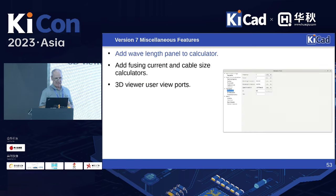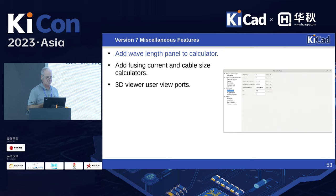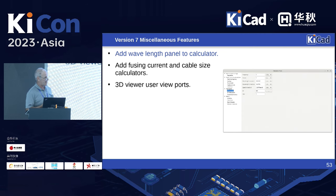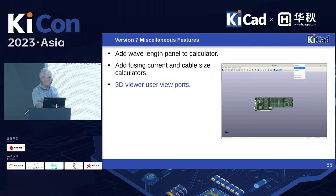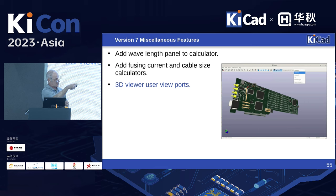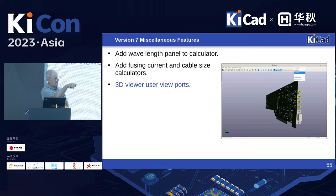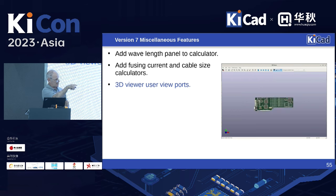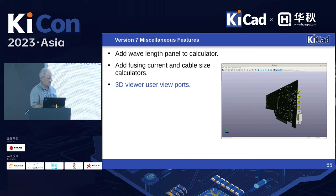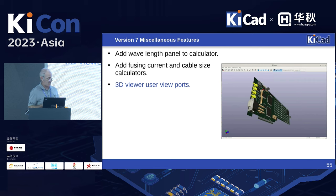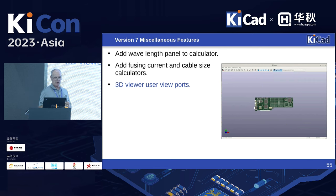A few other version 7 additions: the calculators got a wavelength panel, a fusing current calculator, and a cable size calculator. We also added viewports to the 3D viewer so you can save and recall specific views.